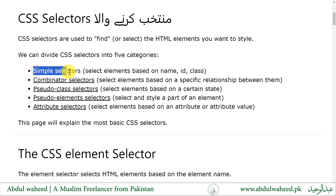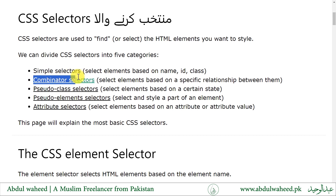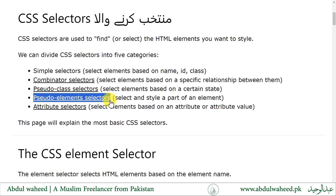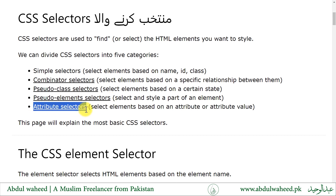1. Simple selectors — select elements based on name, id, or class. 2. Combinator selectors — select elements based on a specific relationship between them. 3. Pseudo-class selectors — select elements based on a certain state. 4. Pseudo-element selectors — select and style a part of an element. 5. Attribute selectors — select elements based on an attribute or attribute value.